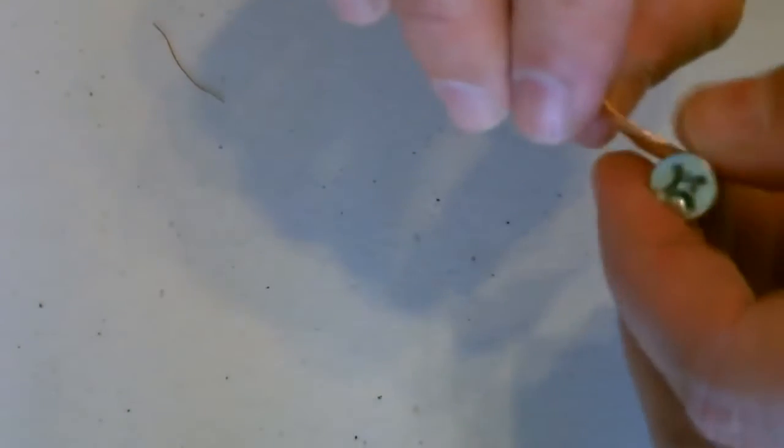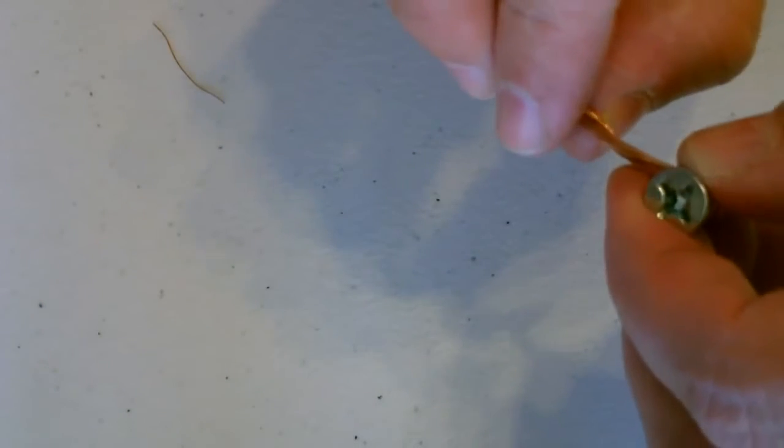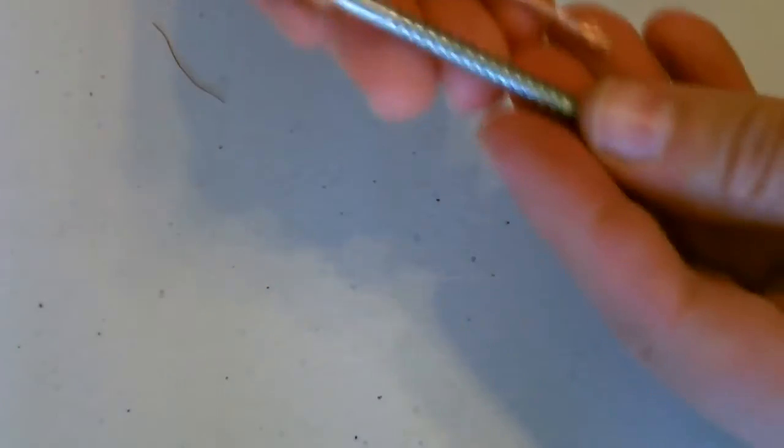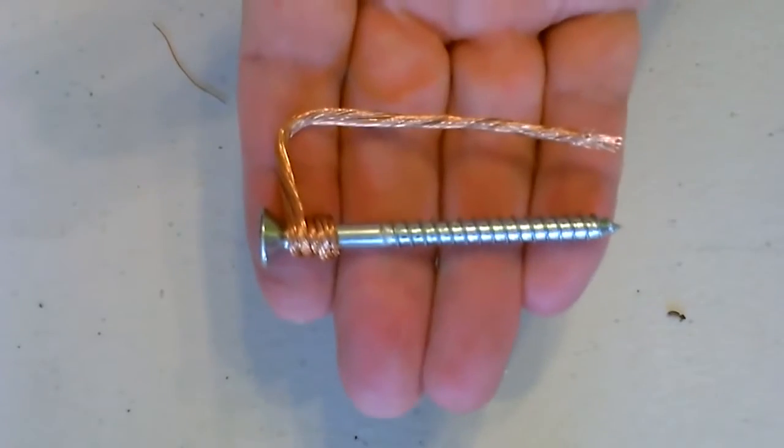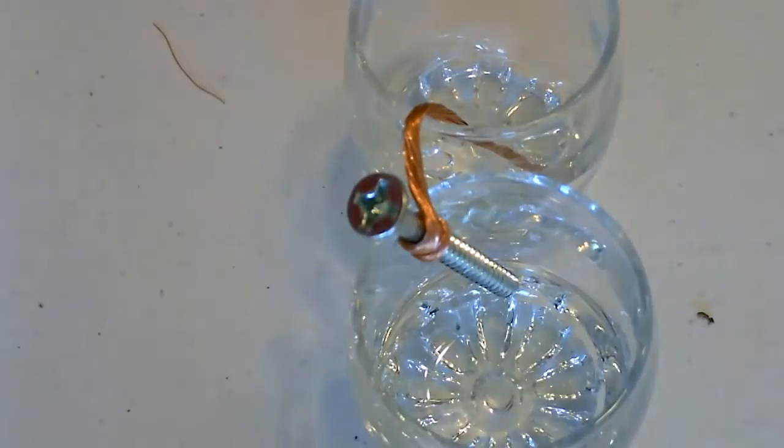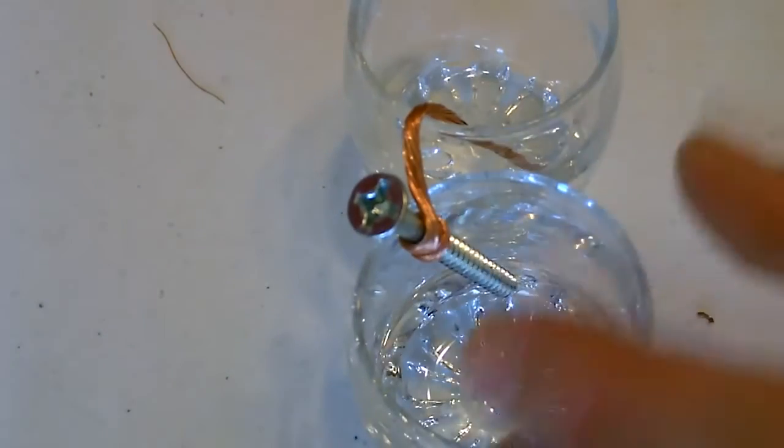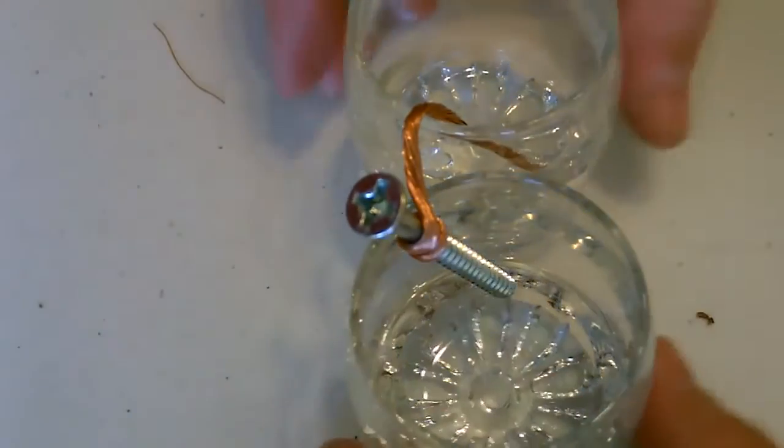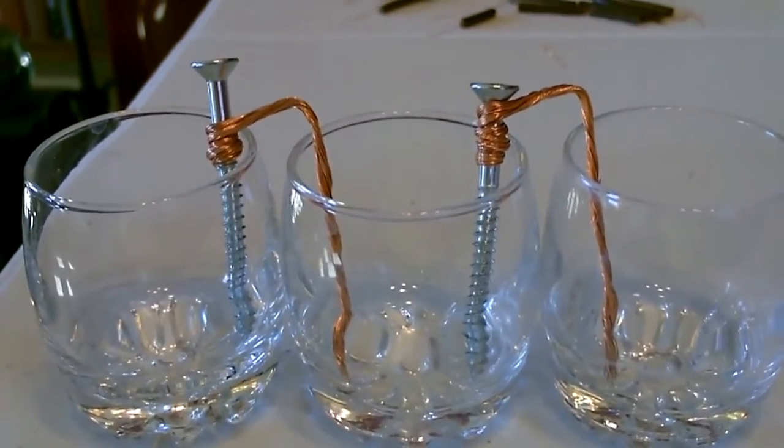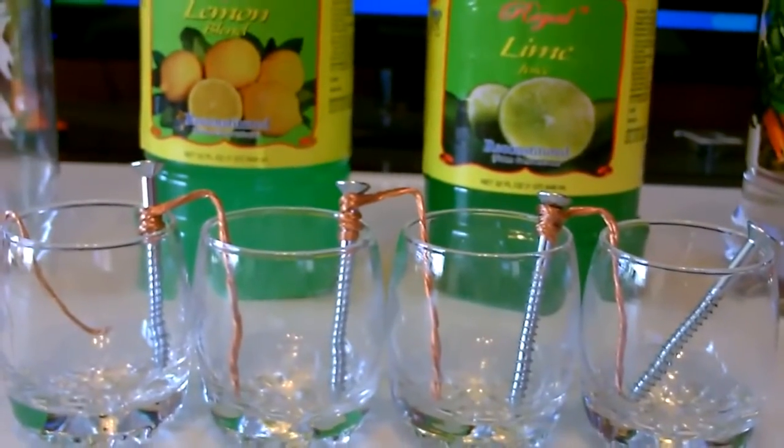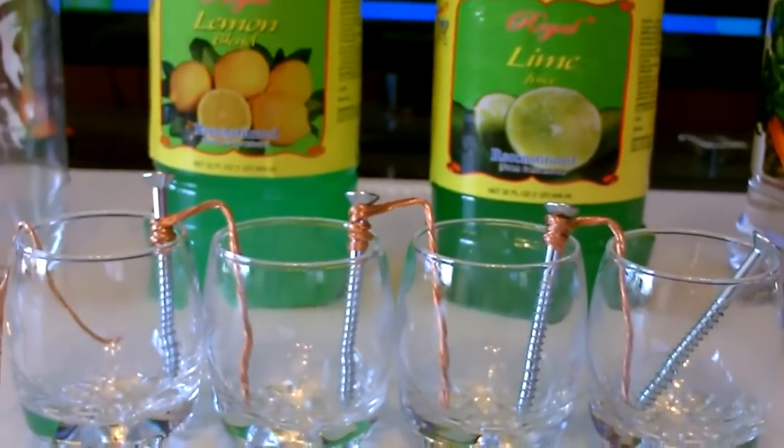Just bend it about there, you should end up with something that looks about like that. So that'll connect cell one to cell two, and then just do this a couple more times. There it is, now just add the different liquids.